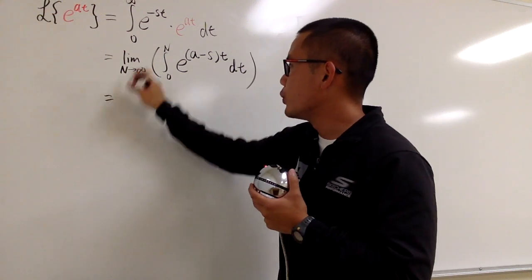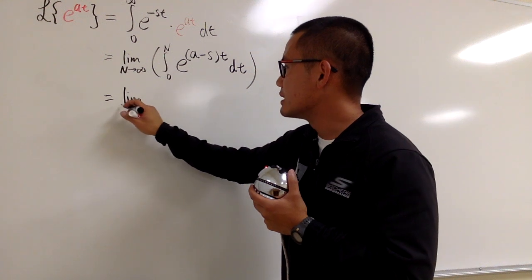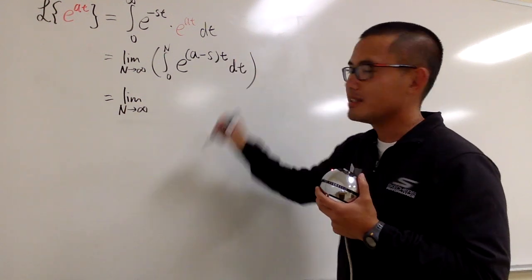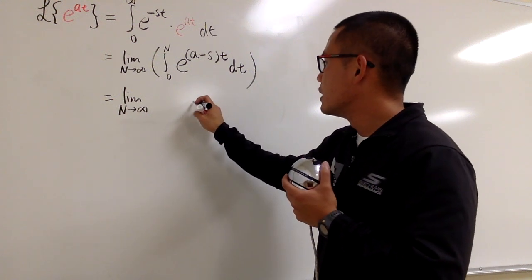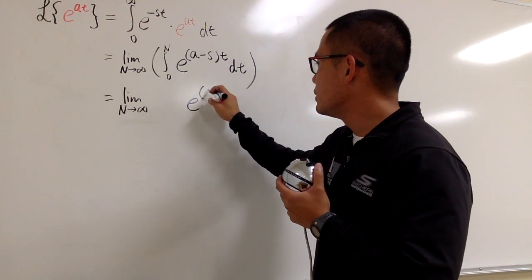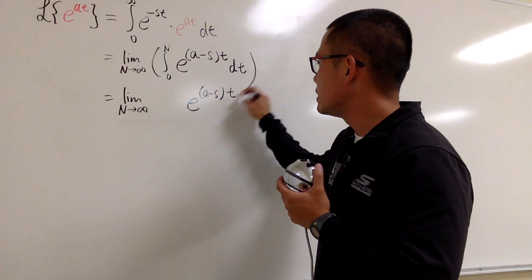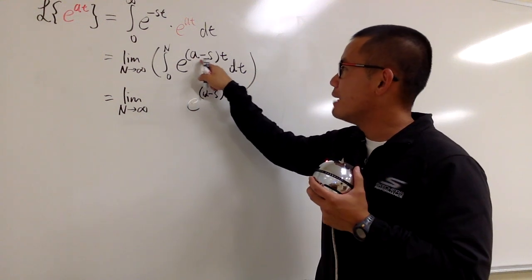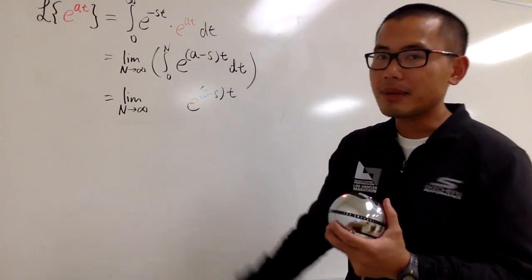Now we will have the limit as n goes to infinity. To integrate e to the something, we first will have e to the same thing, so e to the a minus s times t. And then, what's the derivative of this with respect to t? It's just a minus s. We have to divide it by that. So we will have 1 over a minus s.